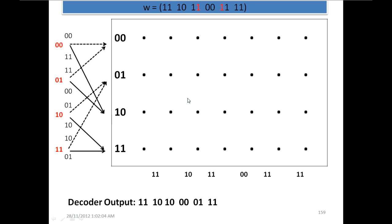Now how does this decoder work? As we know, at the time of encoding the initial state of the encoder is 00, and the sequence is 11 10 10 00 01 11. The shift registers always start from the all-zero state.